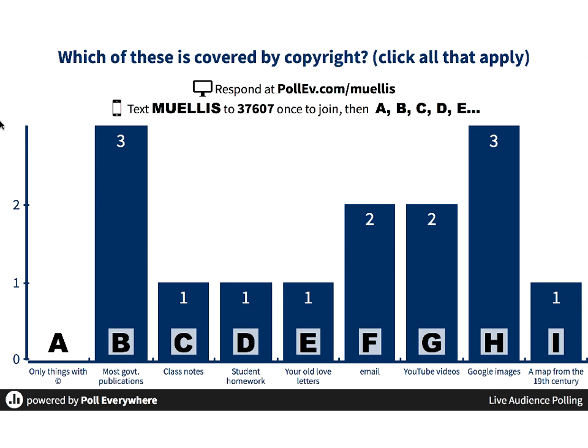You're all pretty good on knowing what things are covered by copyright. It used to be that anything covered by copyright had to have a little C in a circle and had to be registered with the copyright office, but that has not been true since around 1992 when we joined the World Intellectual Property Organization. Now, any work of authorship fixed in a tangible mode of expression is automatically covered by copyright — classes, student homework, old love letters, email, YouTube videos, Google images — they are all by default covered by copyright. Unless explicitly stated otherwise, we should assume that things are covered.